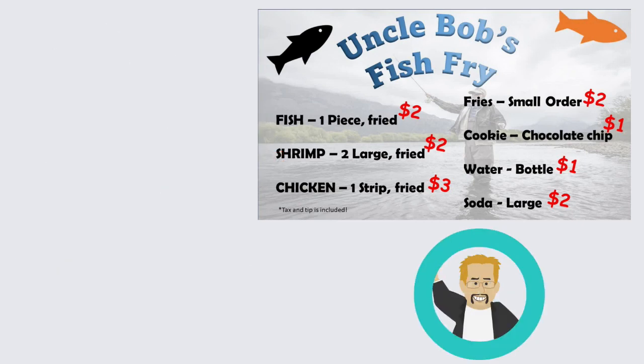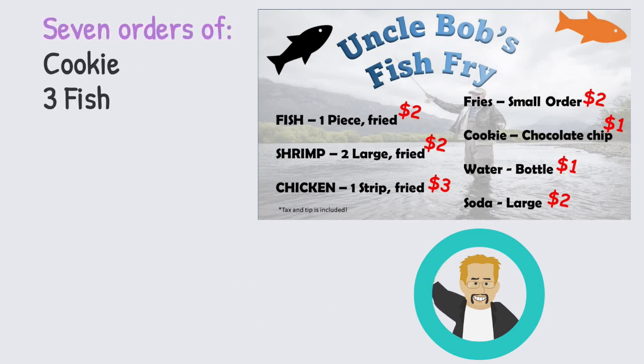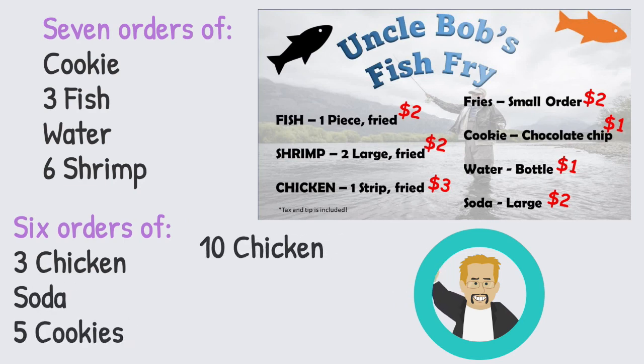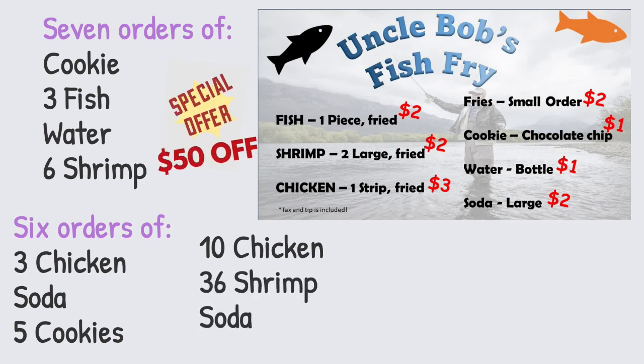Randy pulls up and says he needs 7 of the same order: a cookie, 3 pieces of fish, a bottle of water, and 6 shrimp. Furthermore, he would like 6 orders of 3 pieces of chicken, a soda, and 5 cookies. Randy would also like 10 chicken strips, 36 shrimp, and a large soda. If he has a coupon for $50 off his total, how much will Randy pay Uncle Bob's Fish Fry?